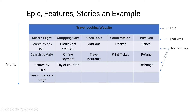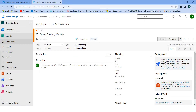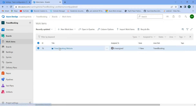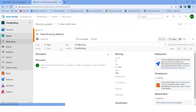Different features need to be created. 'Search Flight' is the first feature. We go from top to bottom and left to right, so the first feature is Search Flight. Click on Work Items, click on the epic, and inside the epic I will add a feature — click on the three dots.